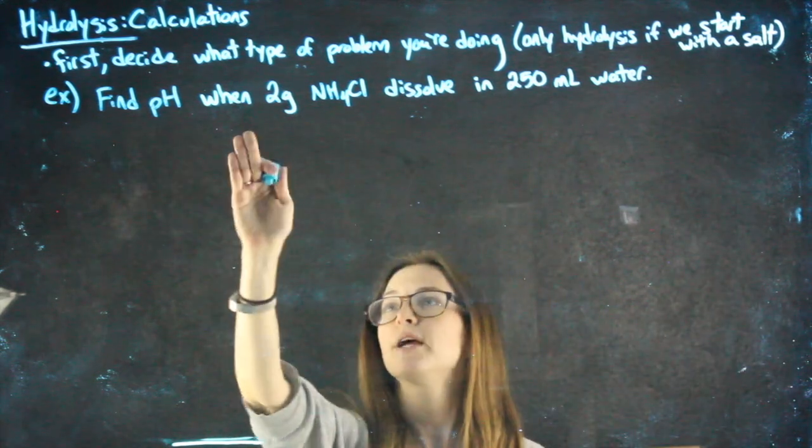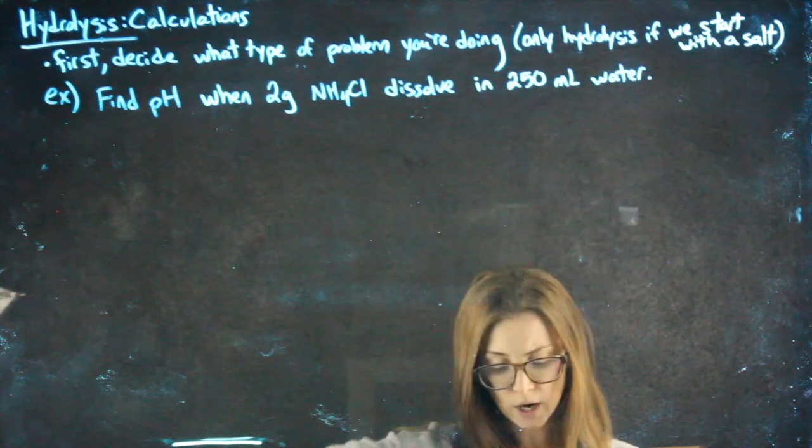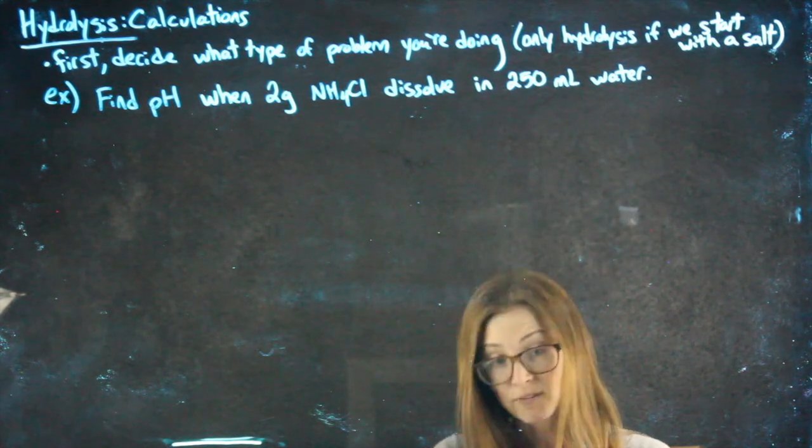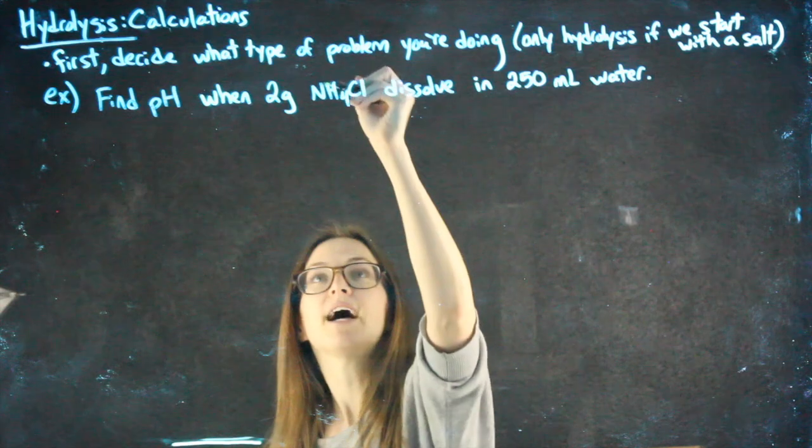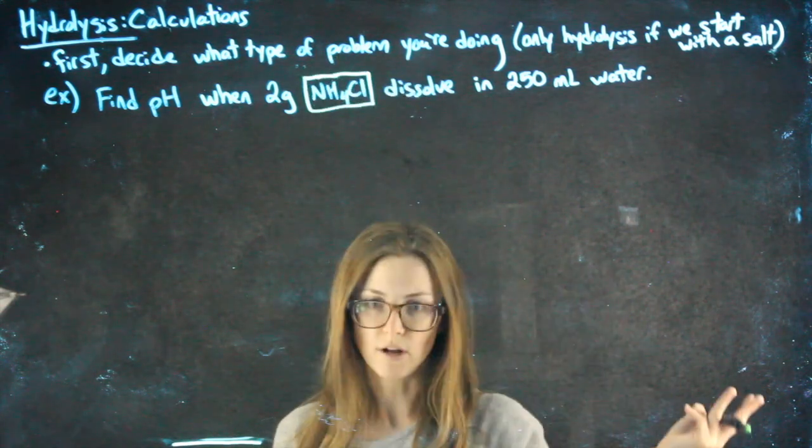So when I read this question, find the pH when two grams of NH4Cl dissolve in 250 mL of water, like we've already practiced today, the first thing we have to ask ourself is, is this an acid, or a base, or a salt?